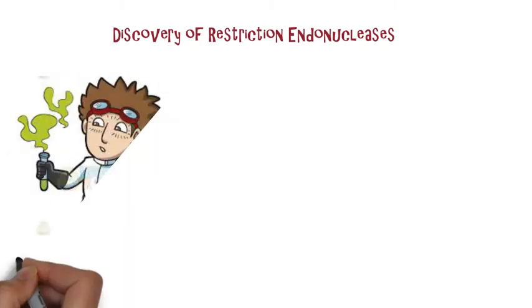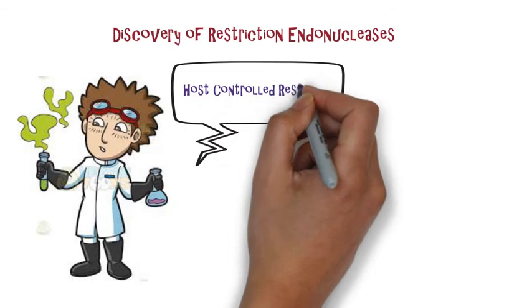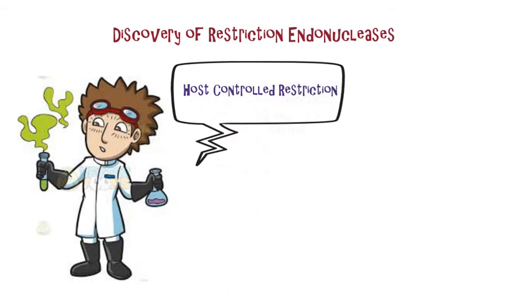The initial observation that led to the eventual discovery of restriction endonucleases was made in the early 1950s when it was shown that some strains of bacteria removed bacteriophage infection, a phenomenon known as host-controlled restriction.